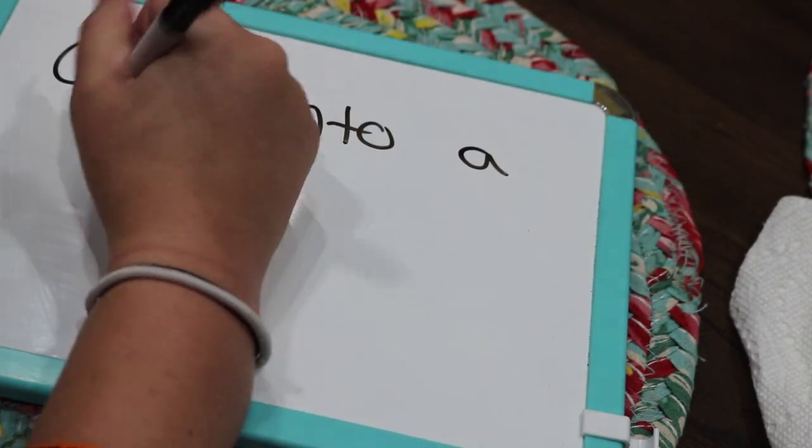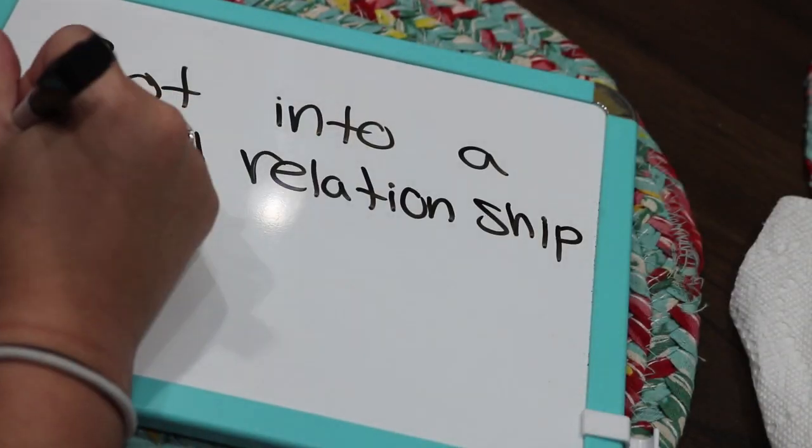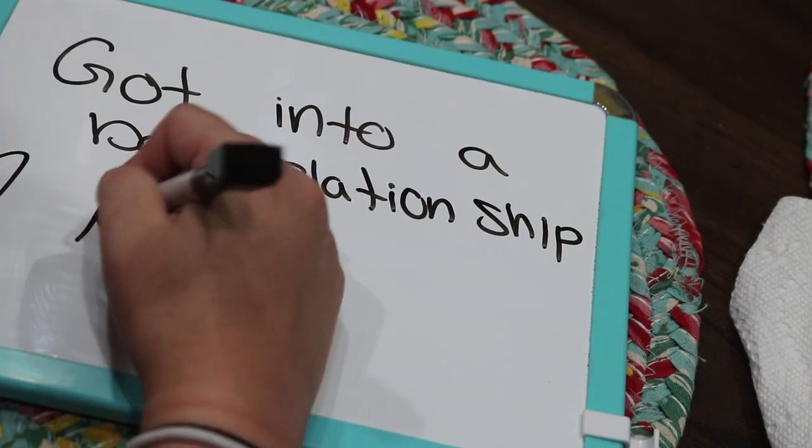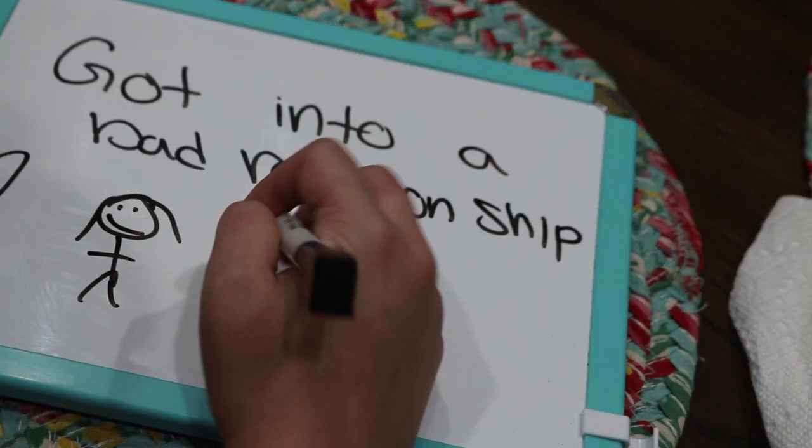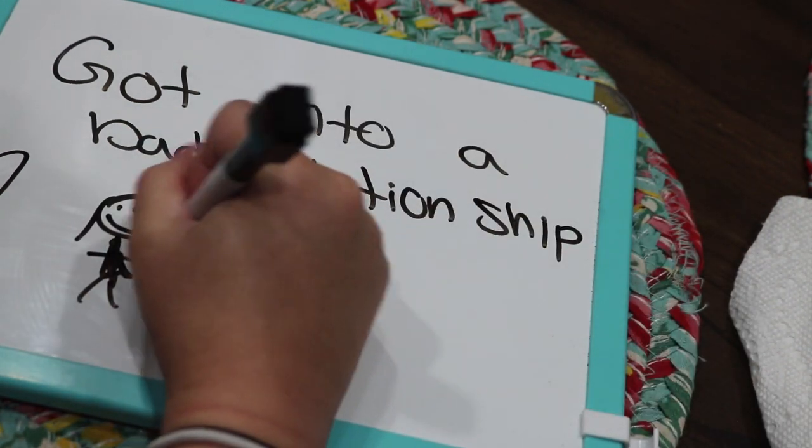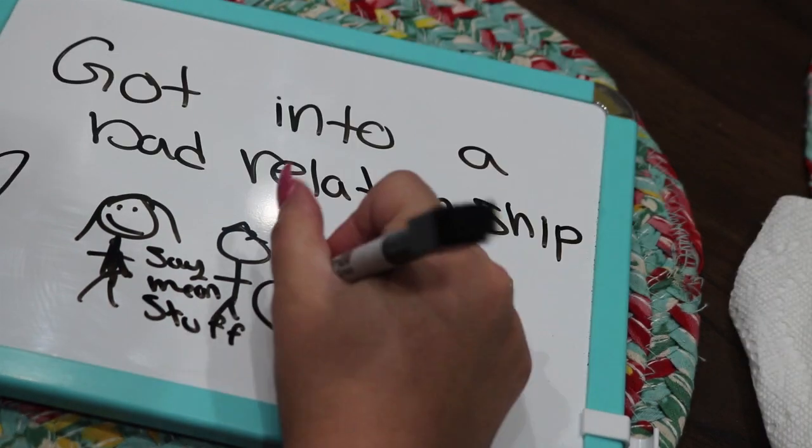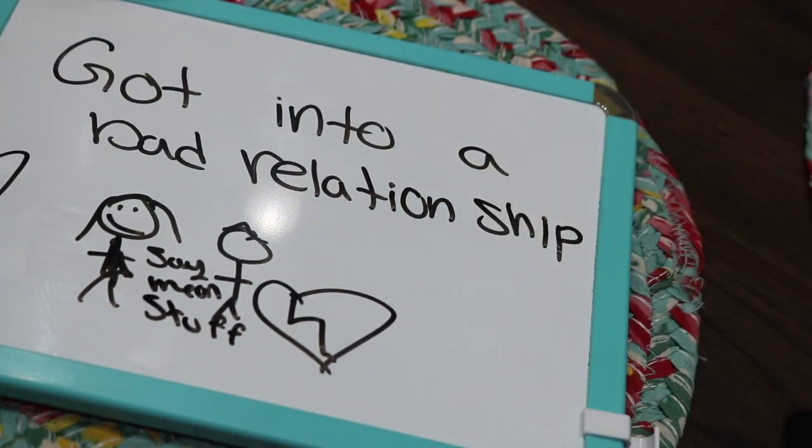That obviously didn't go the way I thought it was gonna go. I got into another relationship. It ended up not being the best situation. I got called names quite often. I got put down a lot. It was a controlling relationship. It was abusive emotionally and physically.